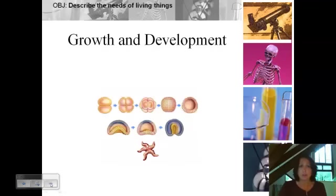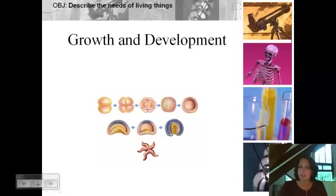All organisms also grow — increase in size — and develop, which means change. A cell divides, we have two, then four, and we're growing, getting more cells and more mass. Then the cells start to change in form, and we end up having an organism — that's the development part. So growth is just increasing the number of cells and getting bigger, while development is how the organism forms.